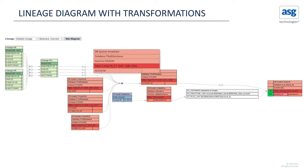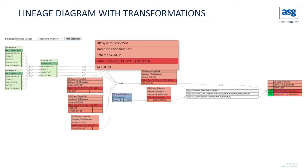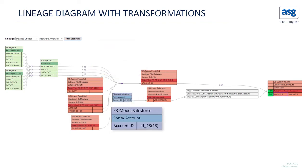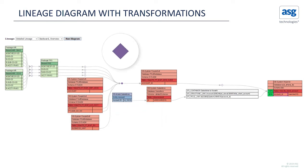The green boxes represent data structures. The red boxes represent databases. And the blue boxes show the modeling tools. The filled diamonds show the logical transformation, and the empty diamonds display a transformation without changes.